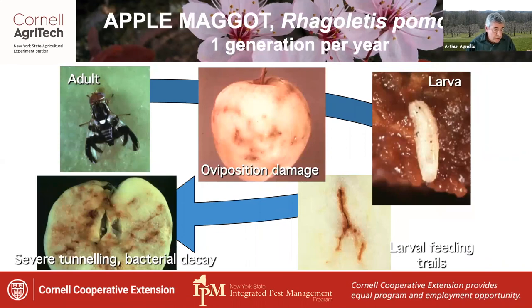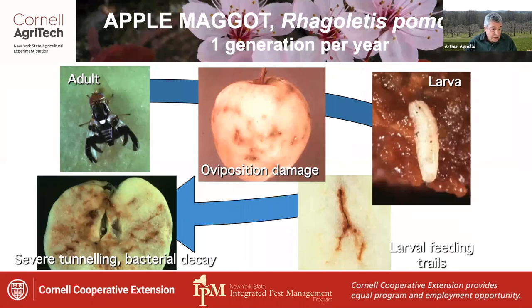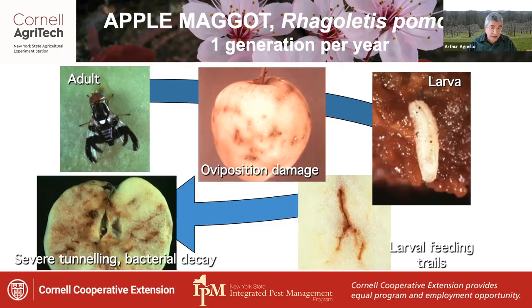Finally, apple maggot — another native species — originally bred in hawthorns and later adopted apple as a host. It has a single generation per year in New York, though in more southern states there can be two. Adults emerge from the soil starting in mid-June and after a week to 10 days of feeding, they mate and females search for fruits to oviposit in. They lay their eggs just under the apple skin, as seen in this unmanaged apple — most backyard apple trees have fruits that look like this. After hatch, the larvae, which are maggots, tunnel through the flesh as they develop, leaving small brownish trails. Over time these get larger and more severe and usually show bacterial decay.